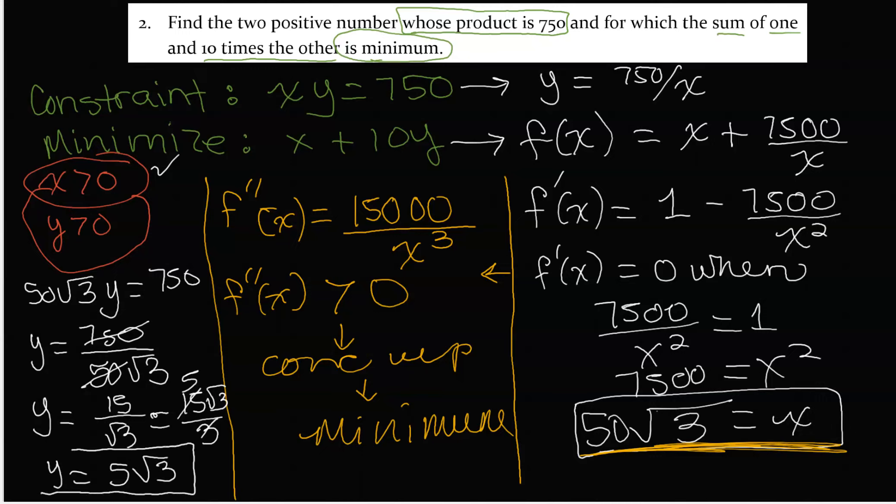So that is the answer. If we want to check to make sure that's okay: 5 times 50 is 250, square root of 3 times square root of 3 is 3, and 3 times 250 is 750 as needed. So those are our two numbers. They are actually not integers; they are irrational numbers.